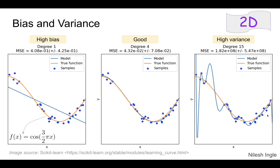However, it is nowhere close to the orange line. We can see that the line is trying very hard to fit through all the data points, and that's a case of high variance, or overfitting.